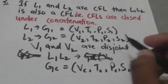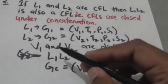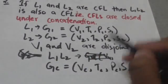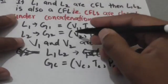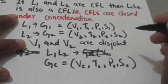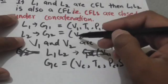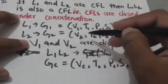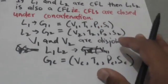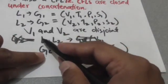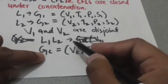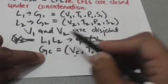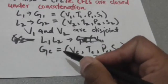Since L1 and L2 are context-free languages, L1 concatenated with L2 will also be a context-free language. We have to define its grammar. First, V1 and V2 should be disjoint; if not, rename the variables. Let GC be the grammar of language L1·L2, defined by the quadruple (Vc, Tc, Pc, Sc). GC will contain all variables of G1 and G2, and a start symbol Sc.